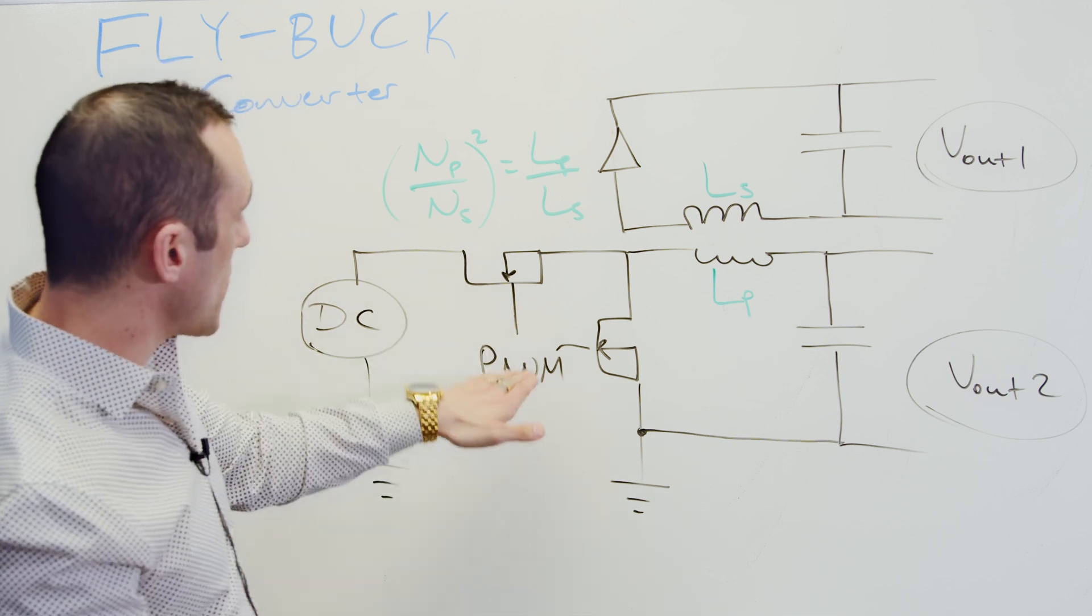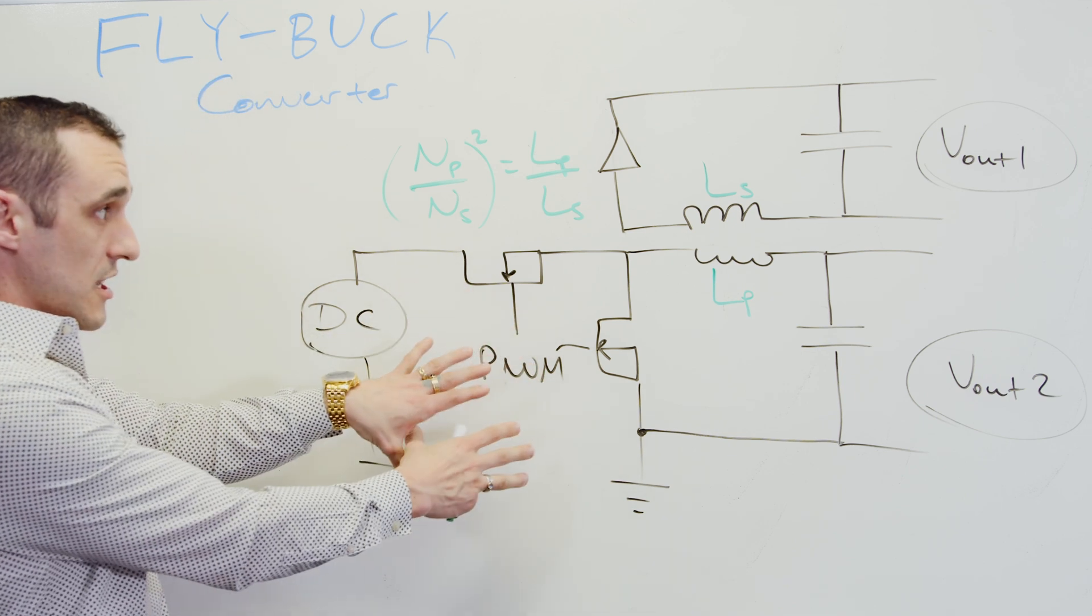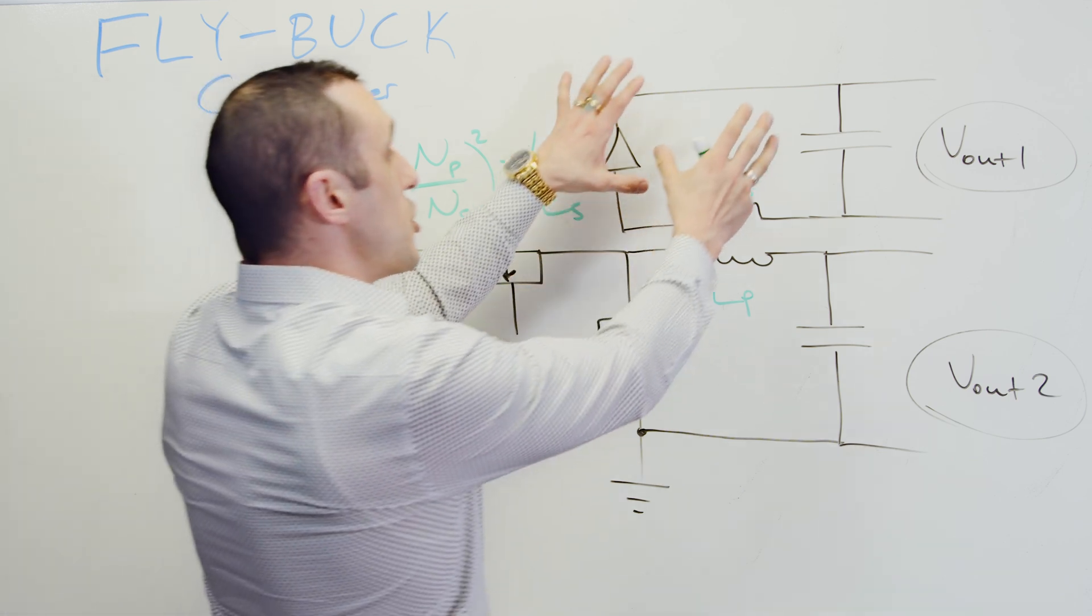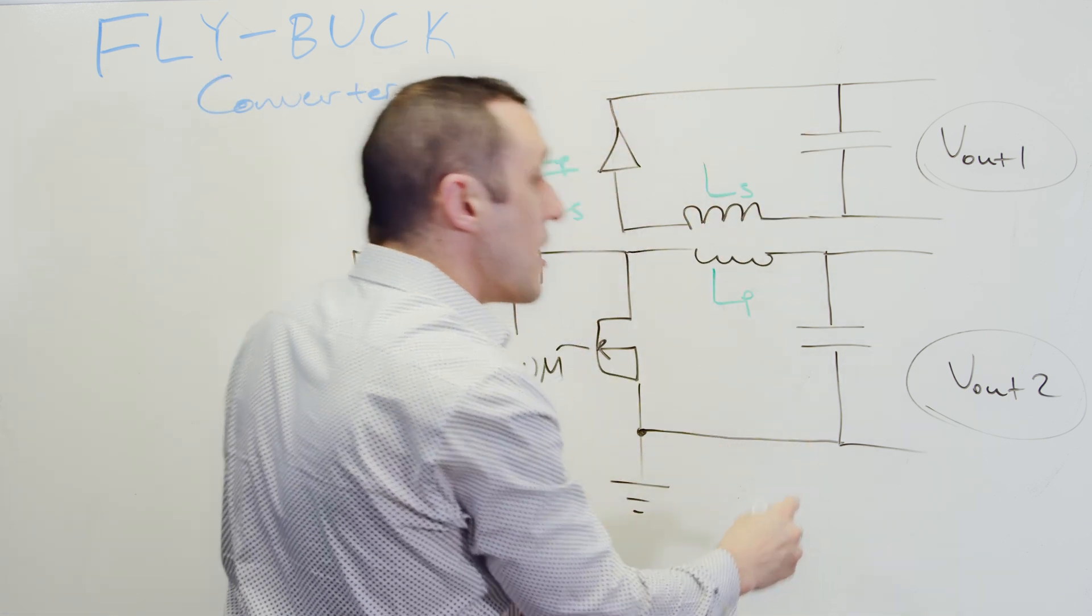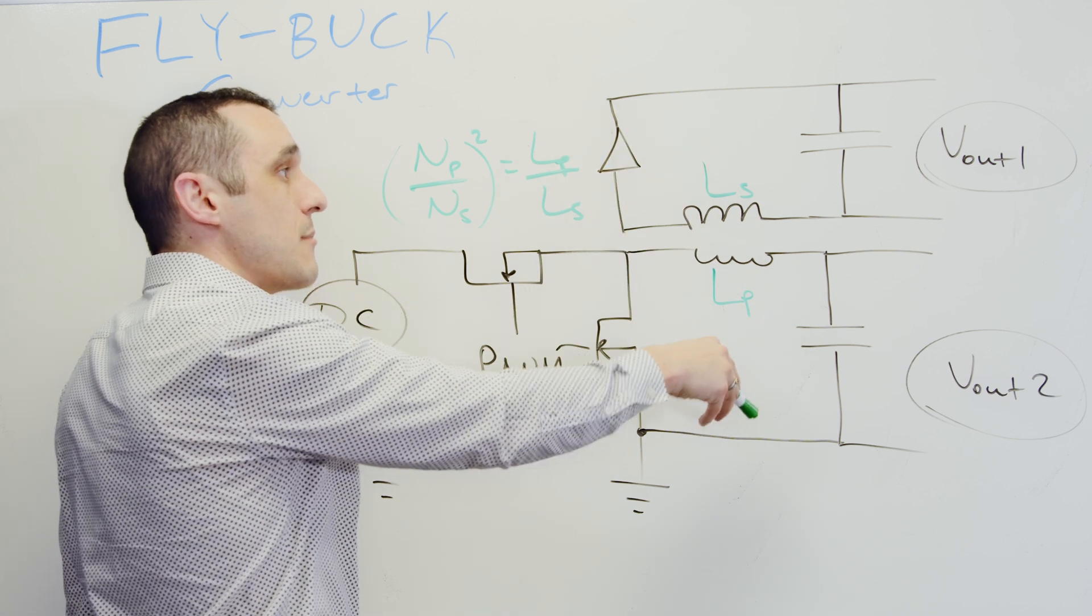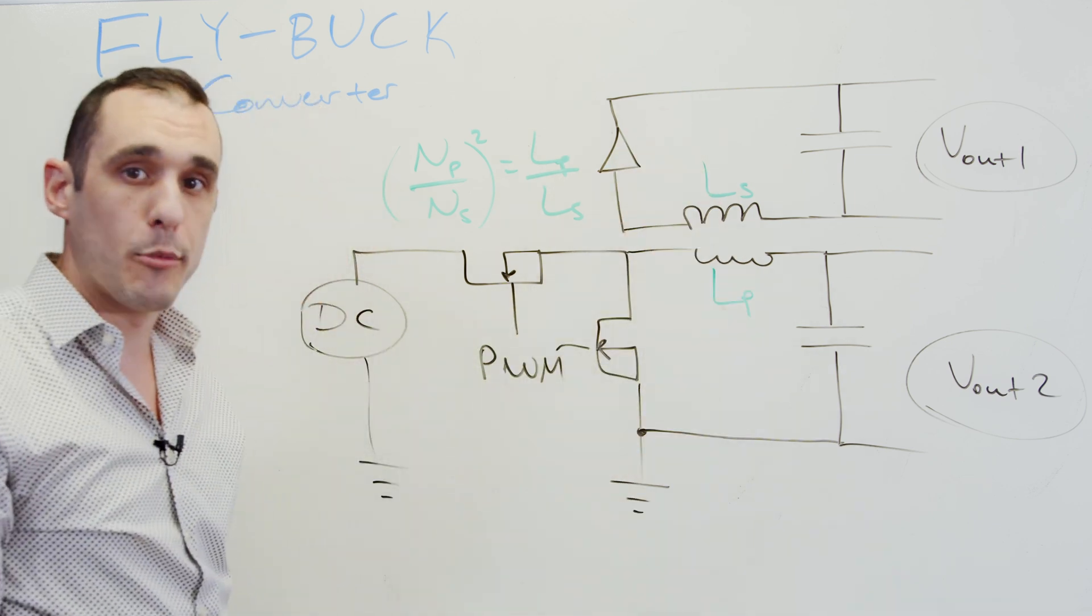So whenever I start to adjust the PWM signal on this input side, I'm going to adjust it proportionally on this output side. So I can essentially maintain the same ratio between these two output voltages.